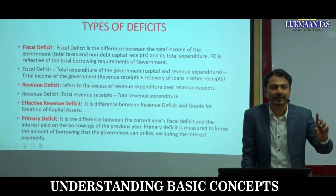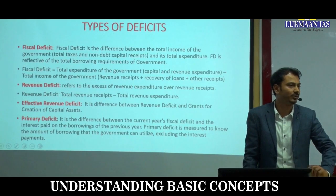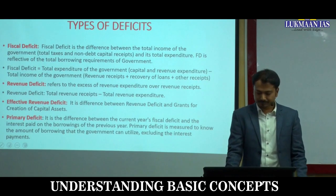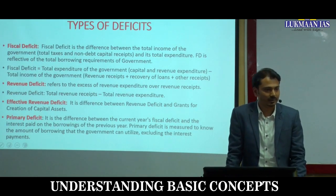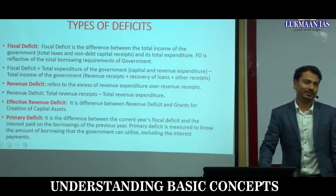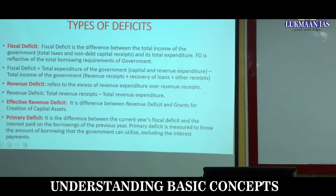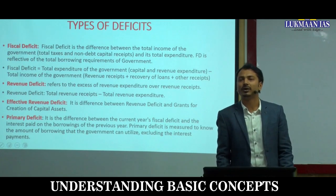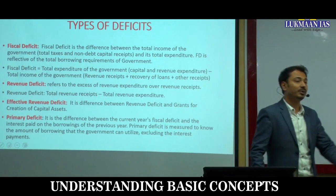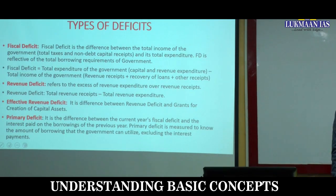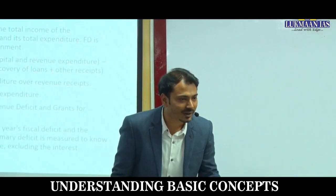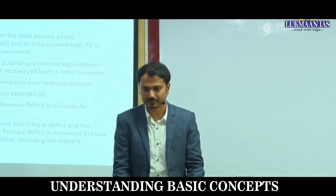Primary Deficit is related to Fiscal Deficit. Primary Deficit is nothing but Fiscal Deficit minus interest payments. Whatever remaining money there is, that is effectively used by the government to source its expenditure. The government takes a lot of loans, so the interest it has to pay on those previous borrowings is subtracted from Fiscal Deficit to give the Primary Deficit.